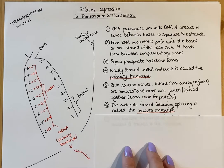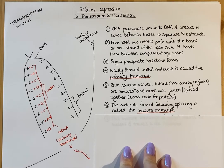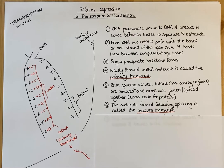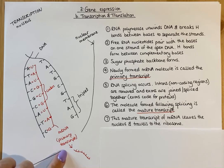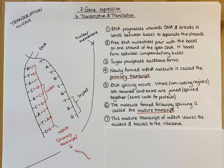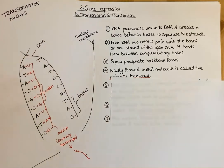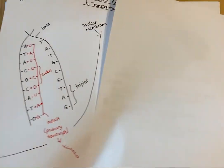Because the purpose of all this is to express a gene and make a protein, we need to go to the site of protein synthesis in a cell, and that would be the ribosomes. The mature transcript of mRNA nucleotides that we have spliced leaves the nucleus through a pore in the nuclear membrane and travels to the ribosome. On the next sheet there is a diagram of that to show you.